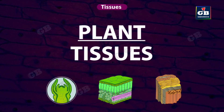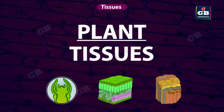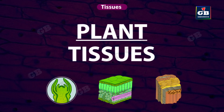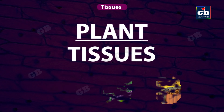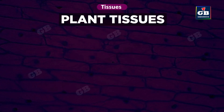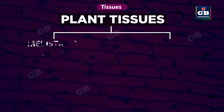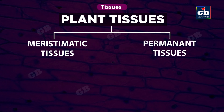Plant tissues. In this video we will learn about plant tissues. Plant tissues are mainly divided into two groups: the first one is meristematic tissues and the second one is permanent tissues.